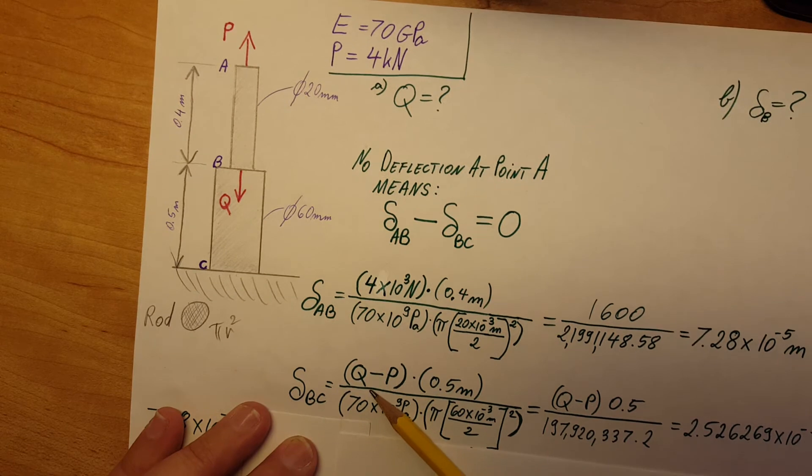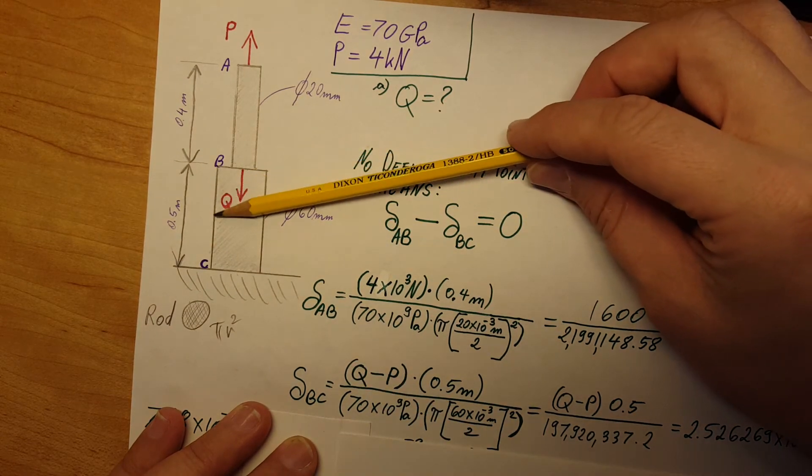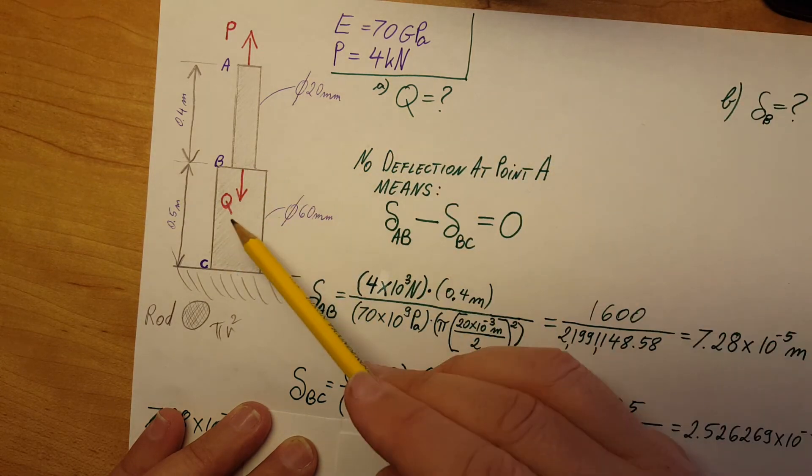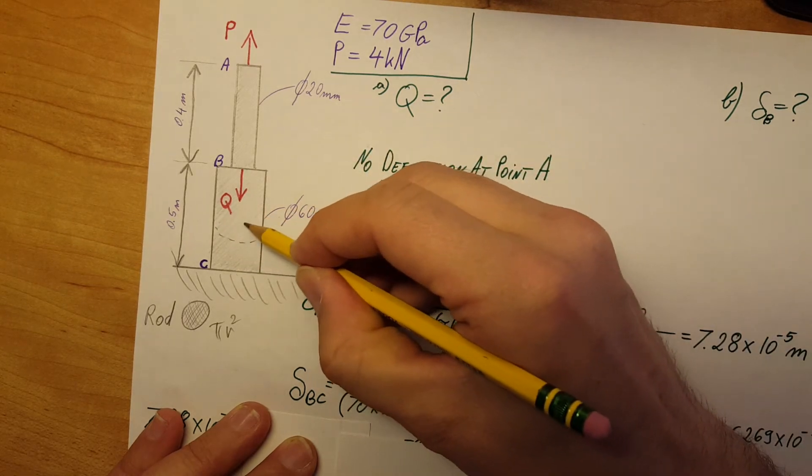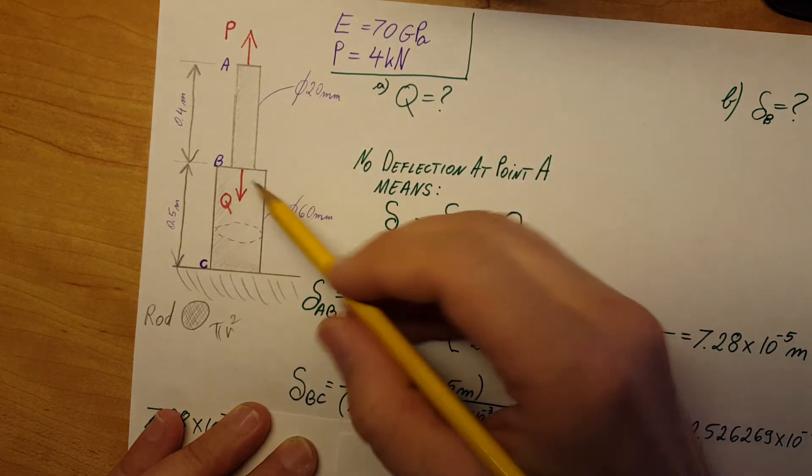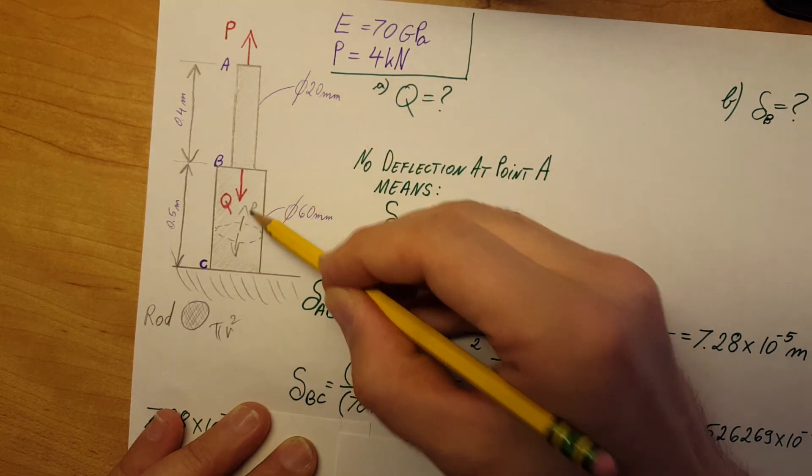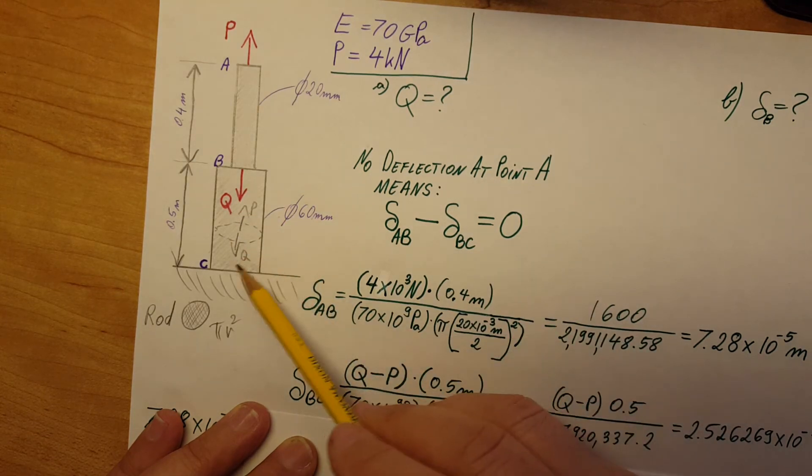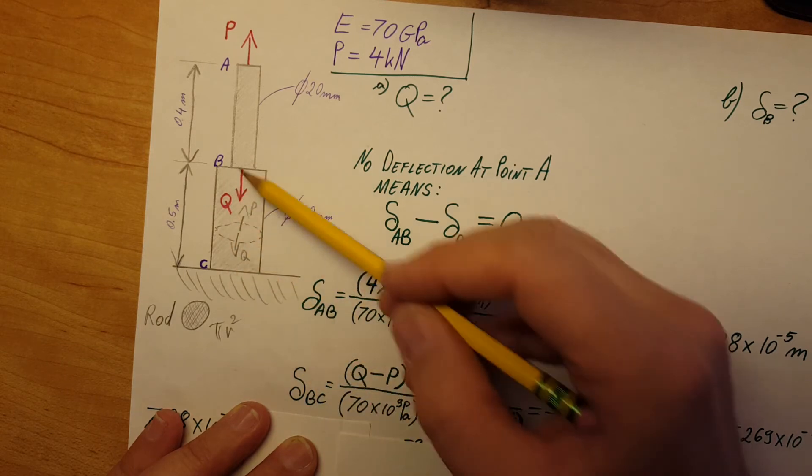Q minus P is our force because if we do a cross-sectional area on this section, we will see that our forces acting here—we would have Q and we would have P. Therefore, Q minus P will give us our net force that is causing the deformation in part BC.